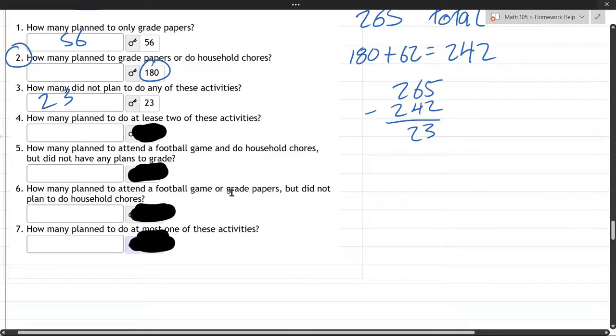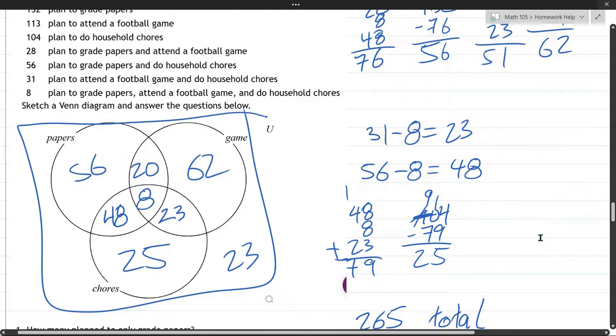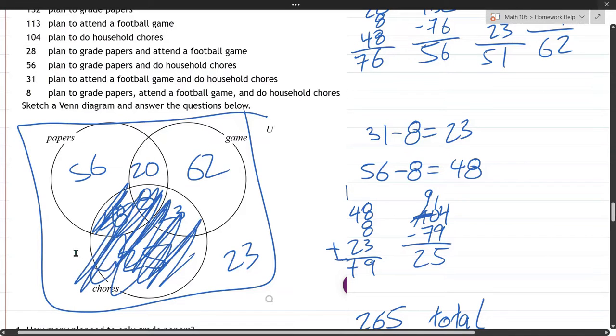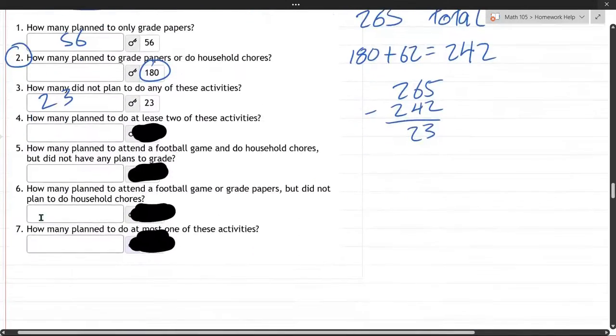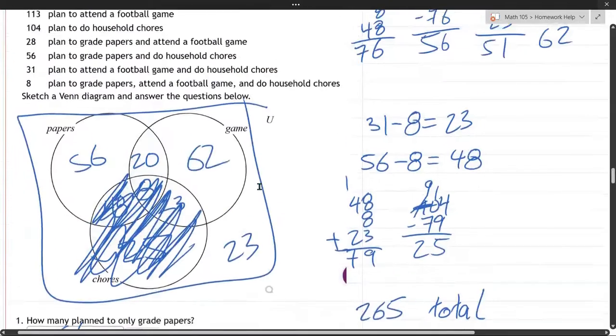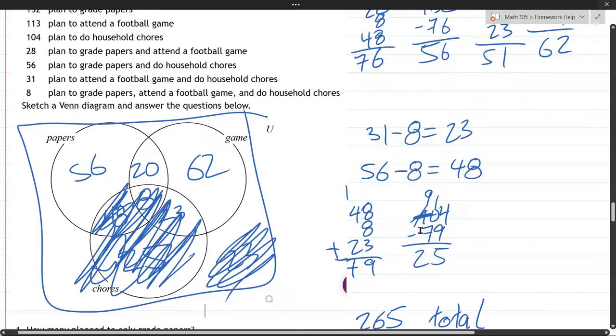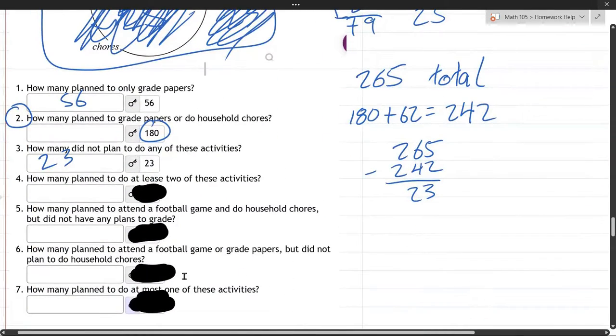Number six. How many plan to attend a football game or grade papers, but no chores? Did not plan to do household chores. Alright. So, chores. Chores are out. What else is out? You have to attend a football game or grade papers. If you're doing nothing, you don't count here for number six. So, I've got to cross out the people doing nothing, which is these 23. And what we have left, those three numbers added together, will give me the answer to number six.